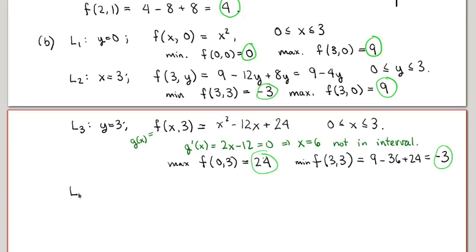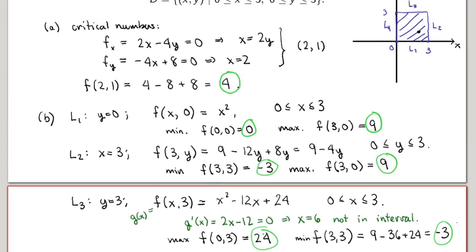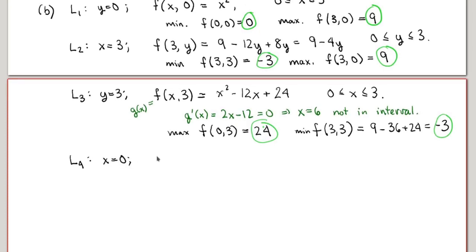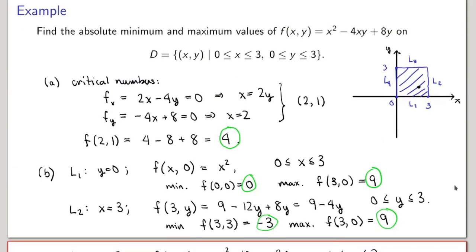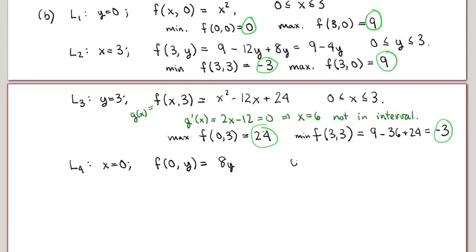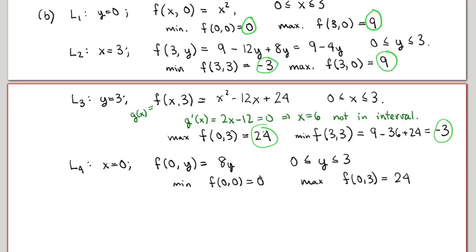On L4 (x = 0): the function reduces to 8y, with y ∈ [0, 3]. This is increasing, so the minimum is f(0,0) = 0 and the maximum is f(0,3) = 24.